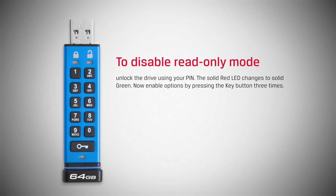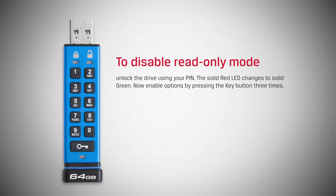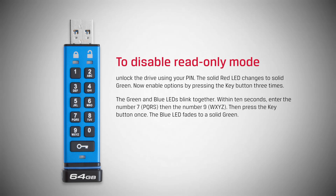To disable read-only mode, unlock the drive using your pin. The solid red LED changes to solid green. Now, enable options by pressing the key button three times. The green and blue LEDs blink together.